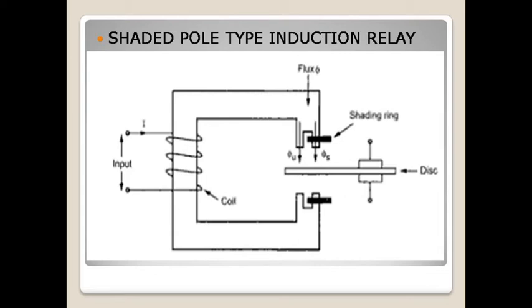Due to this phase difference of two fluxes, it generates a rotating magnetic field. This rotating magnetic field induces an EMF in the aluminum disc, and as EMF is induced, eddy current flows in the disc.